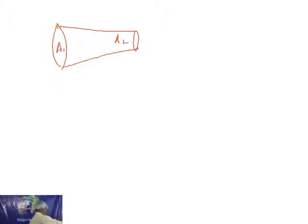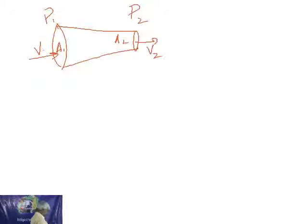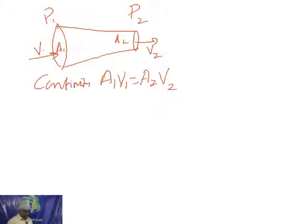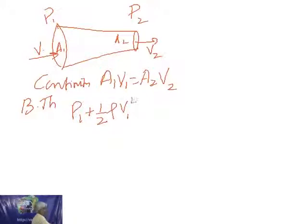This is area A1 and this is area A2. Velocity of liquid entering is V1 and velocity leaving is V2. Pressure at entry is P1 and at exit P2. We have to use the equation of continuity: A is inversely proportional to velocity, or A into V equals constant, so A1V1 equals A2V2.